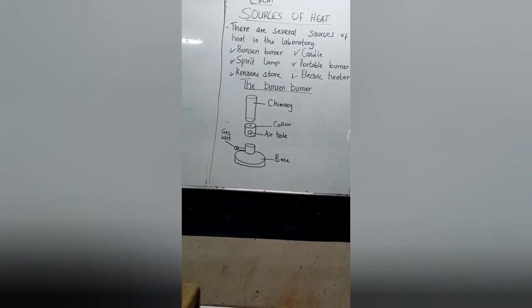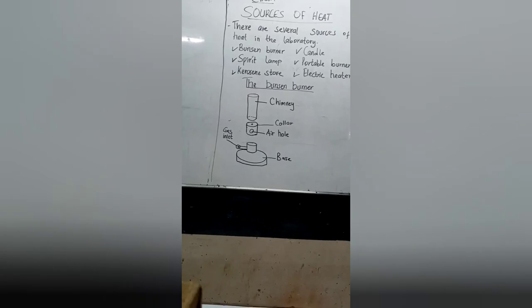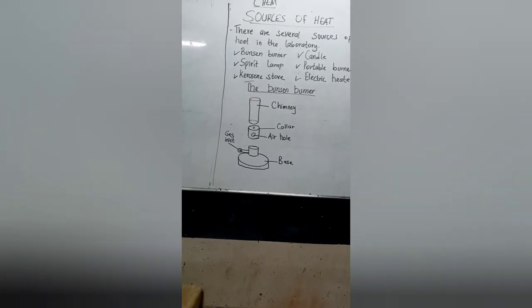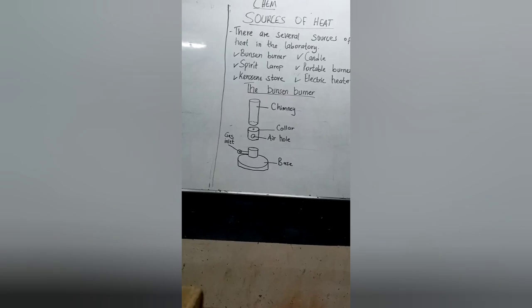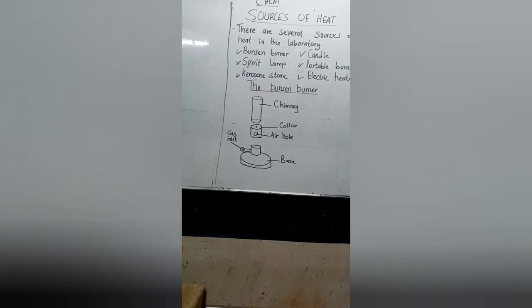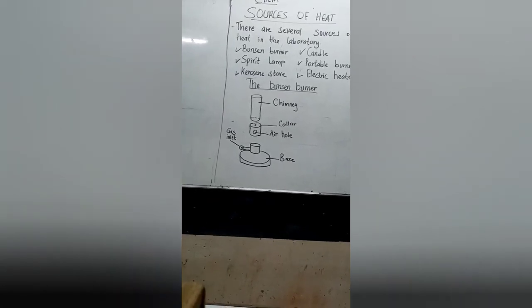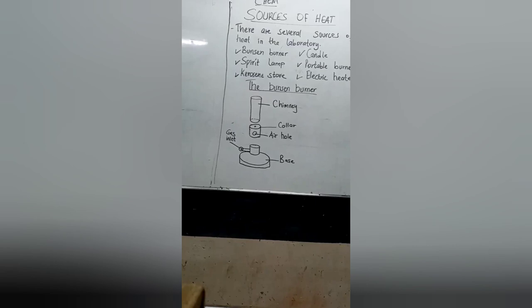The main source of heat in our common labs is the Bunsen burner. A Bunsen burner has three parts: it has a chimney where the air and the laboratory gas mix; we have the collar where we have the air hole, the point where air enters into the Bunsen burner; and we have the base, which also contains the gas inlet that connects us to the source of the laboratory gas.